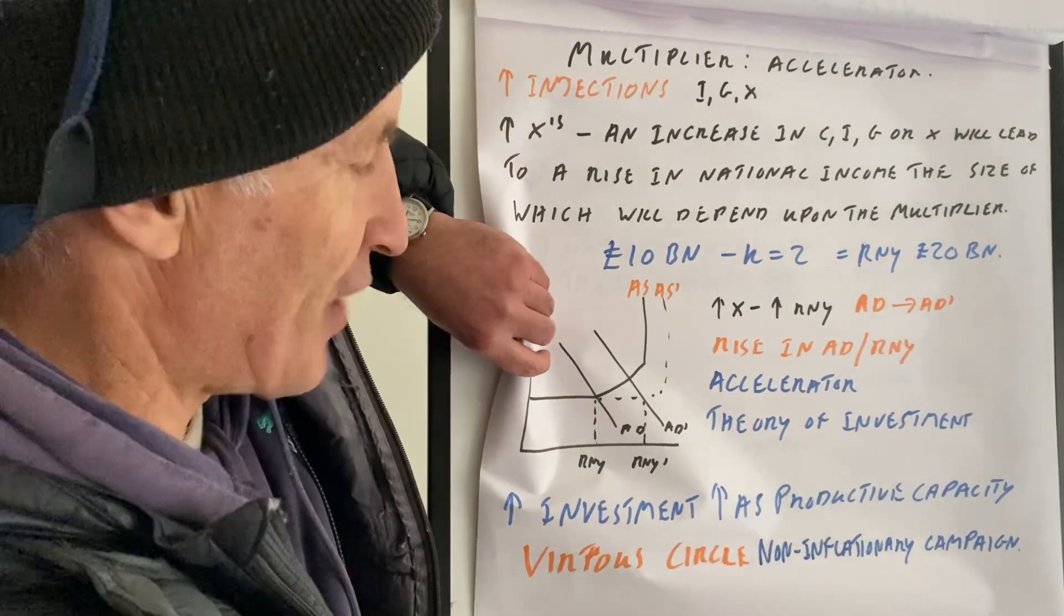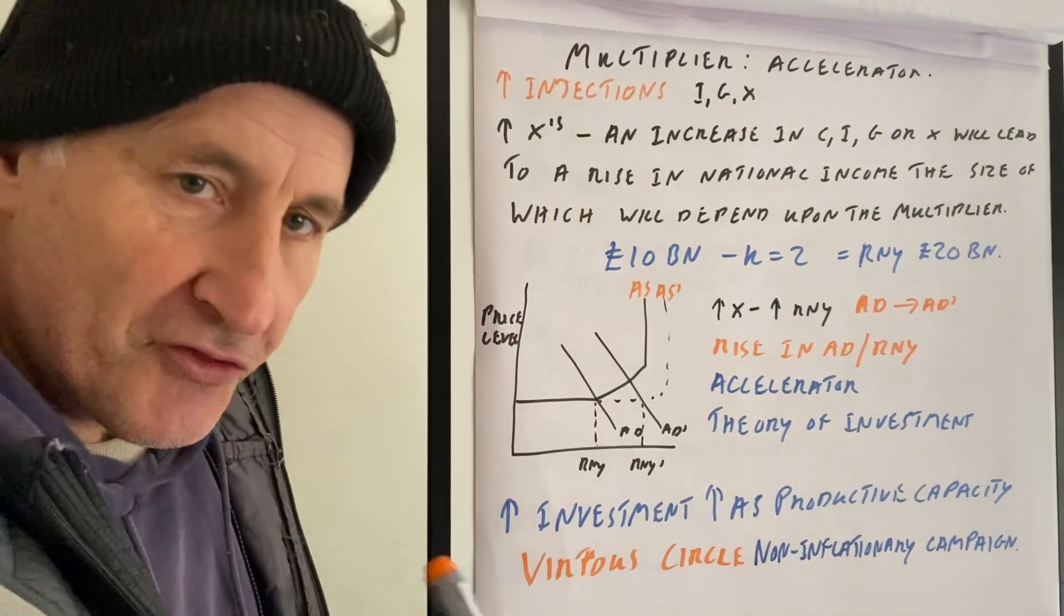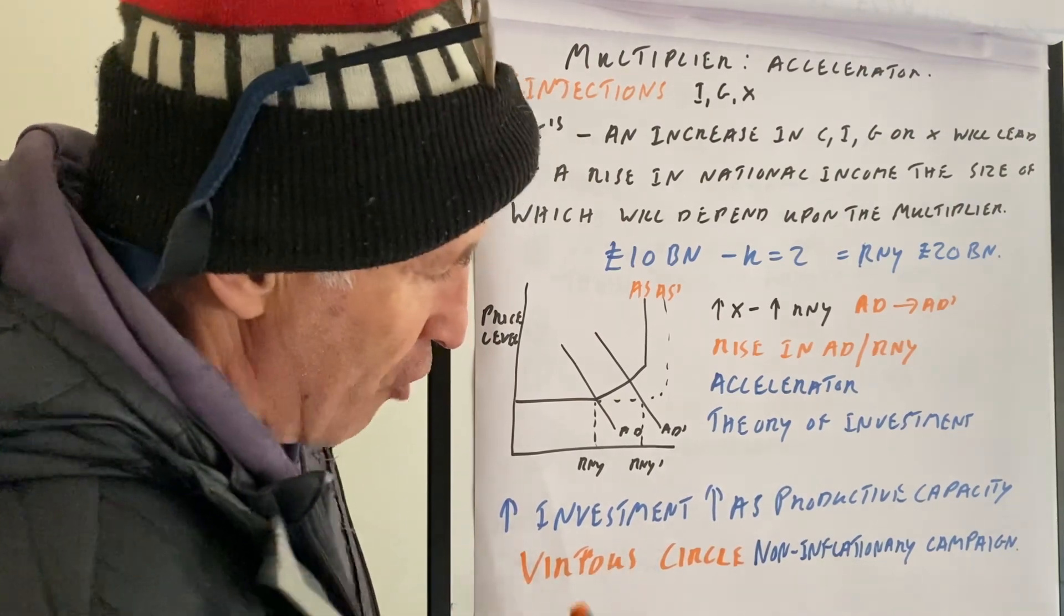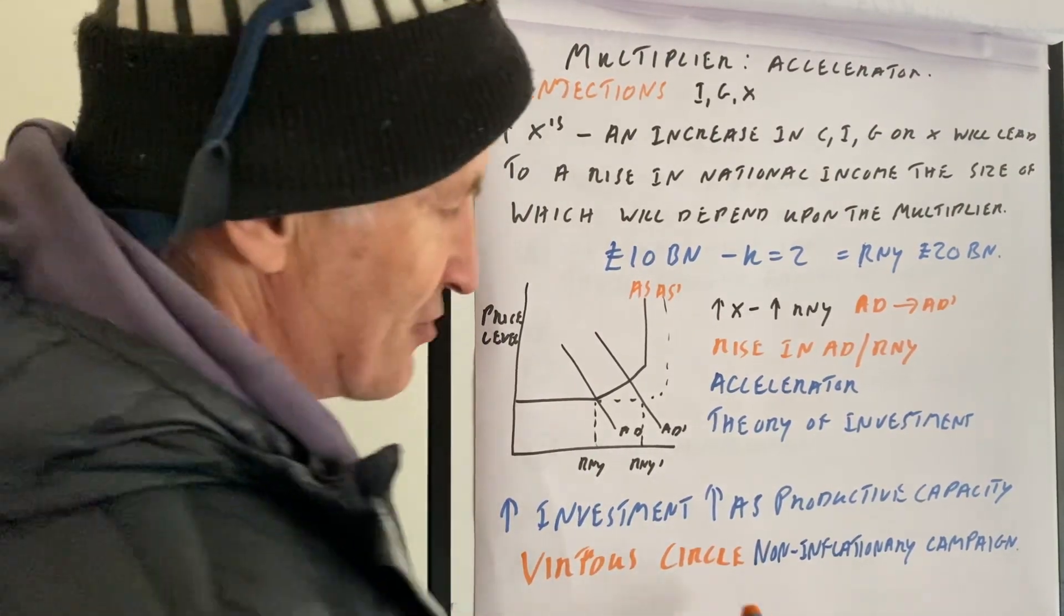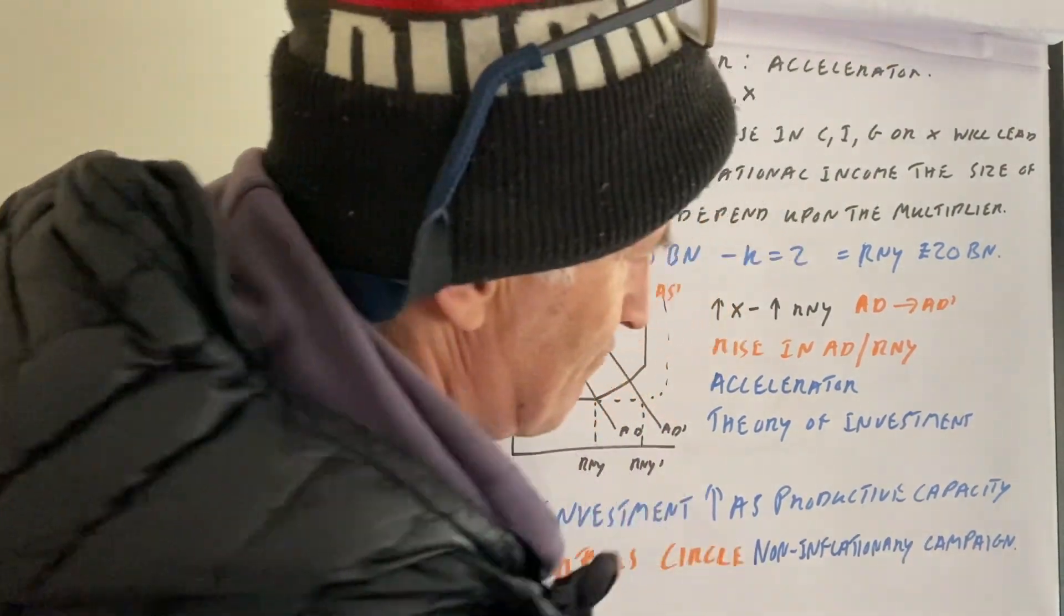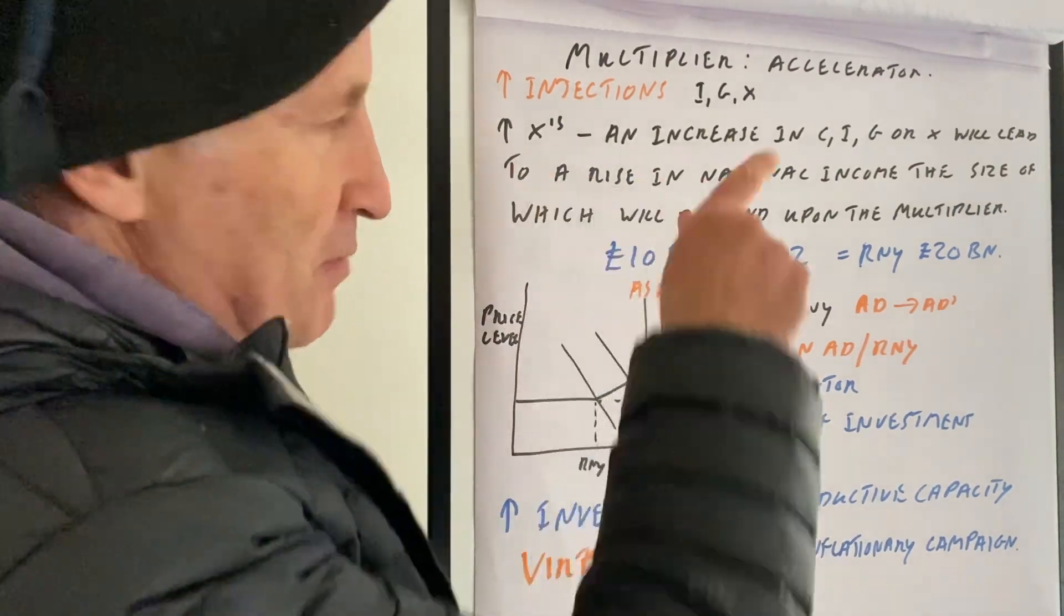So increasing the investment will then increase AS, and that will increase your productive capacity. And if you think about it, that will create a virtuous circle—sorry, I spelled the word wrong—and eventually we might be able to get non-inflationary growth from there. Okay, number one done: multiplier-accelerator.